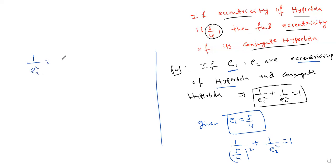1 by e2 square equals 1 minus 1 by 5 by 4 whole square. That's 25 by 16. 1 by 25 by 16 which is 16 by 25. So 1 minus 16 by 25. Move this to the right side.